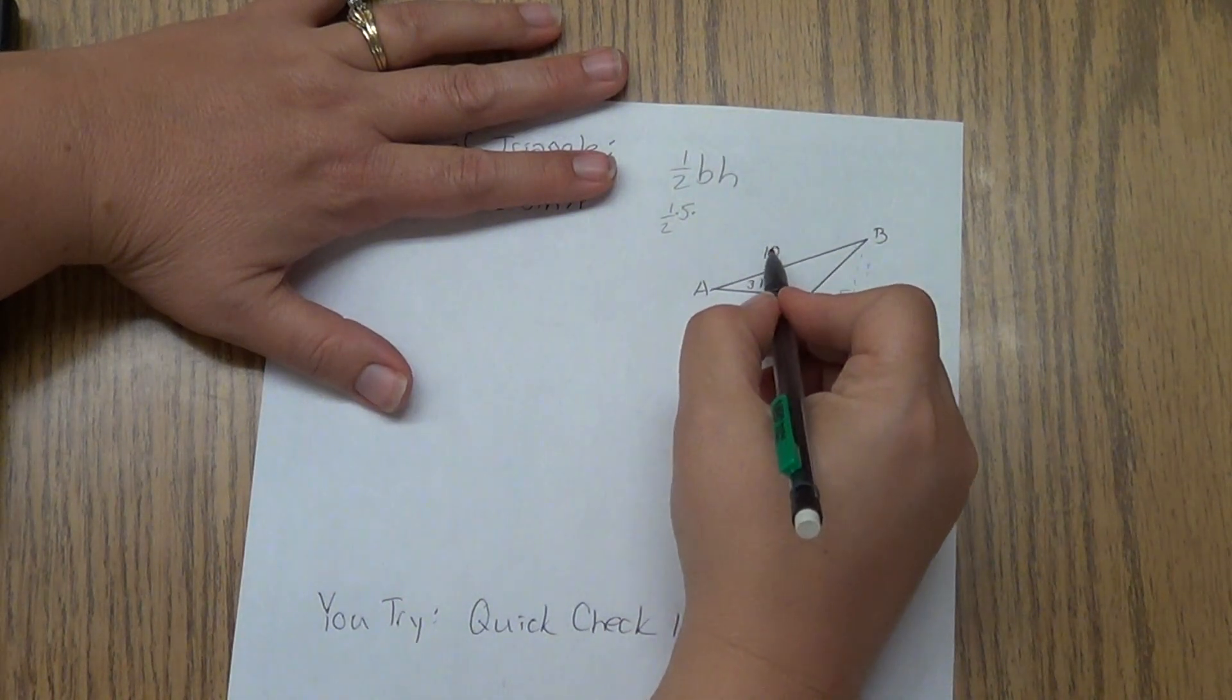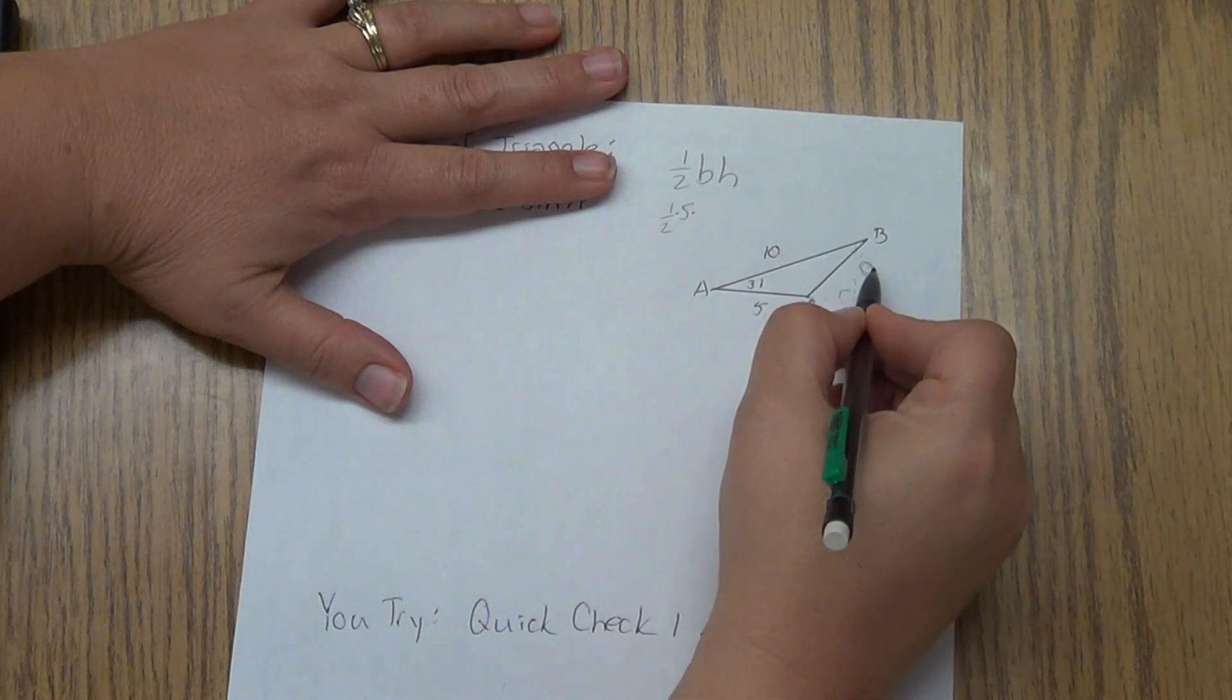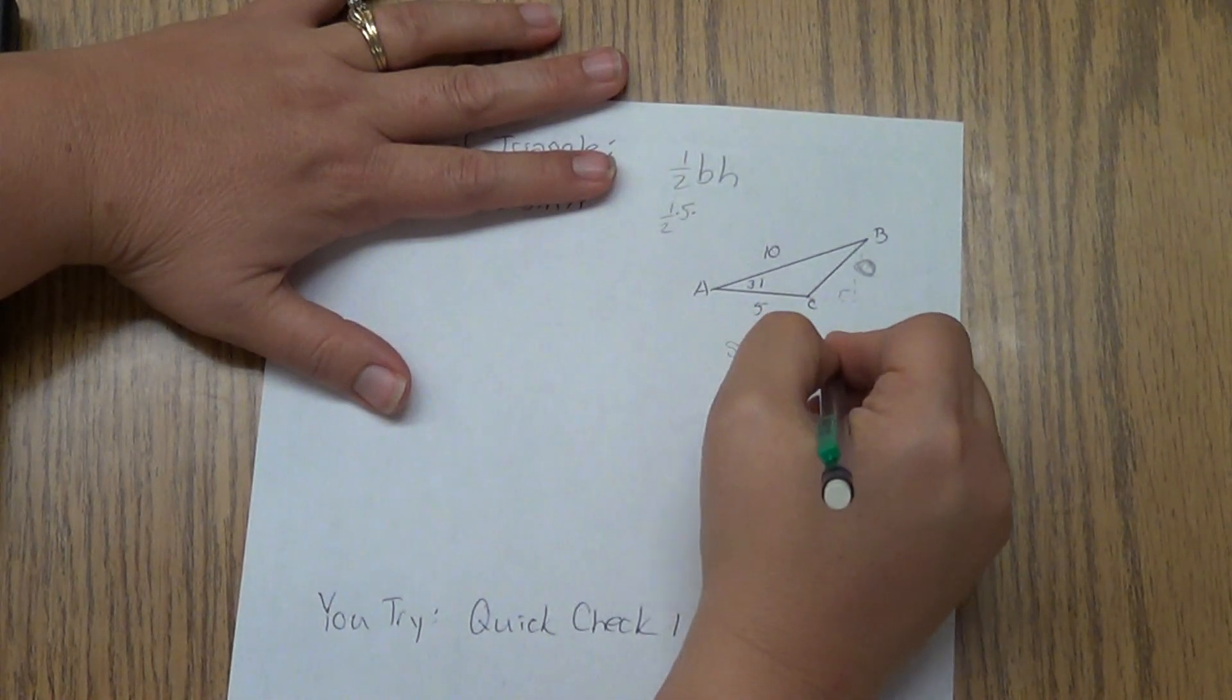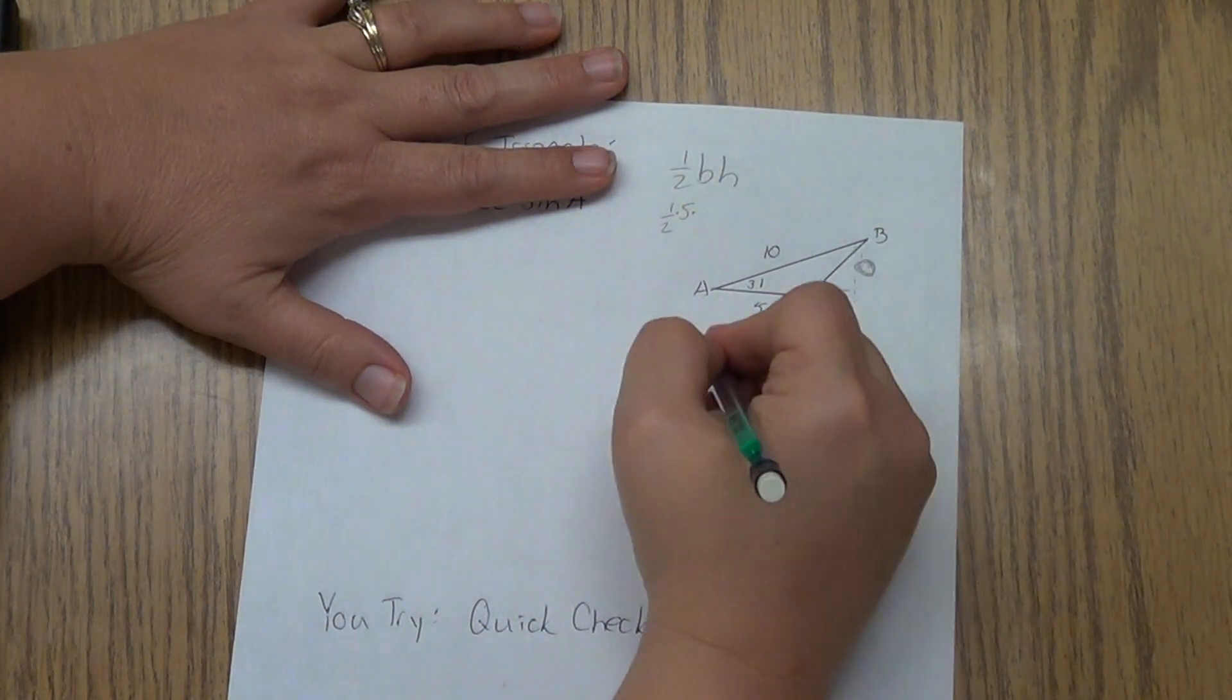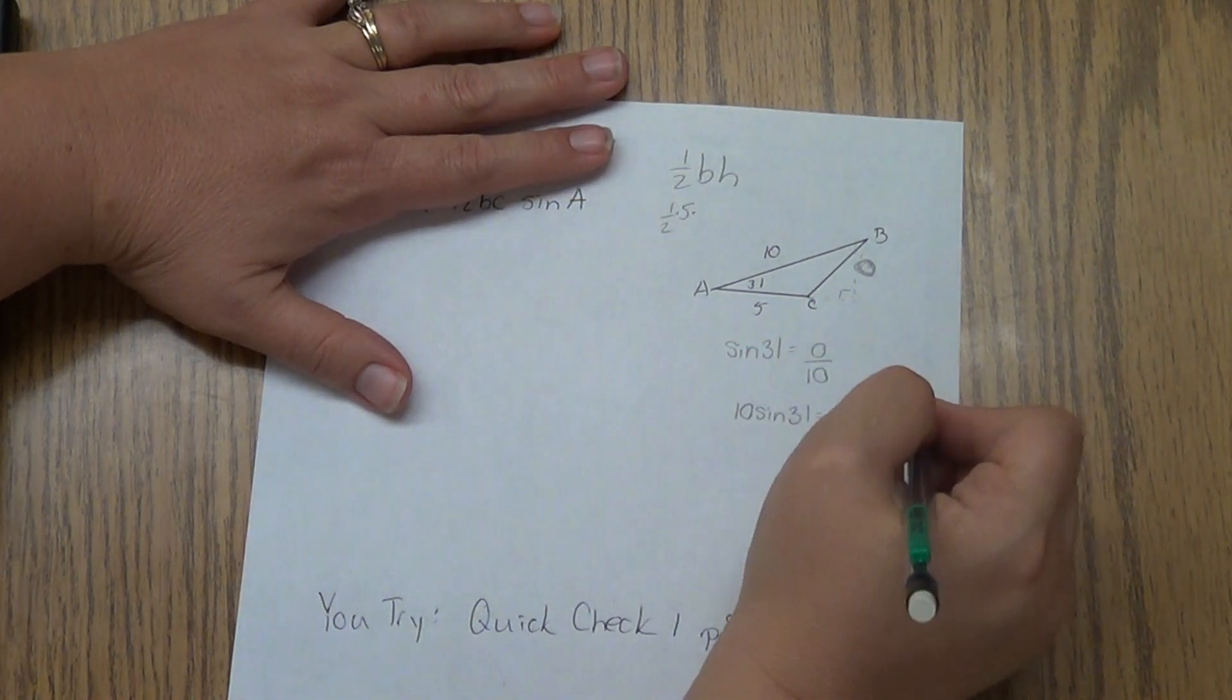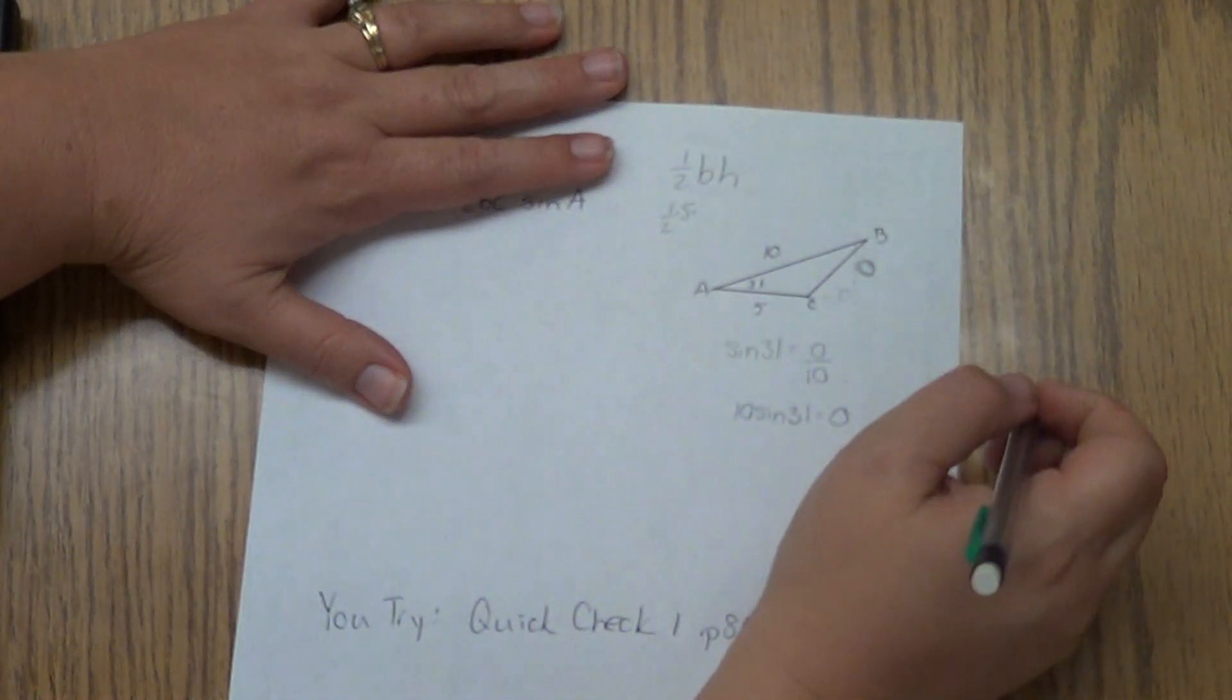Here's my angle. Here's my hypotenuse. So to find this side, that would be my opposite. So if I was going to do trig, I could do the sine of 31 equals opposite over hypotenuse. Then multiply my 10 over to there. So 10 sine of 31 would give me my opposite, which is the height of my triangle.